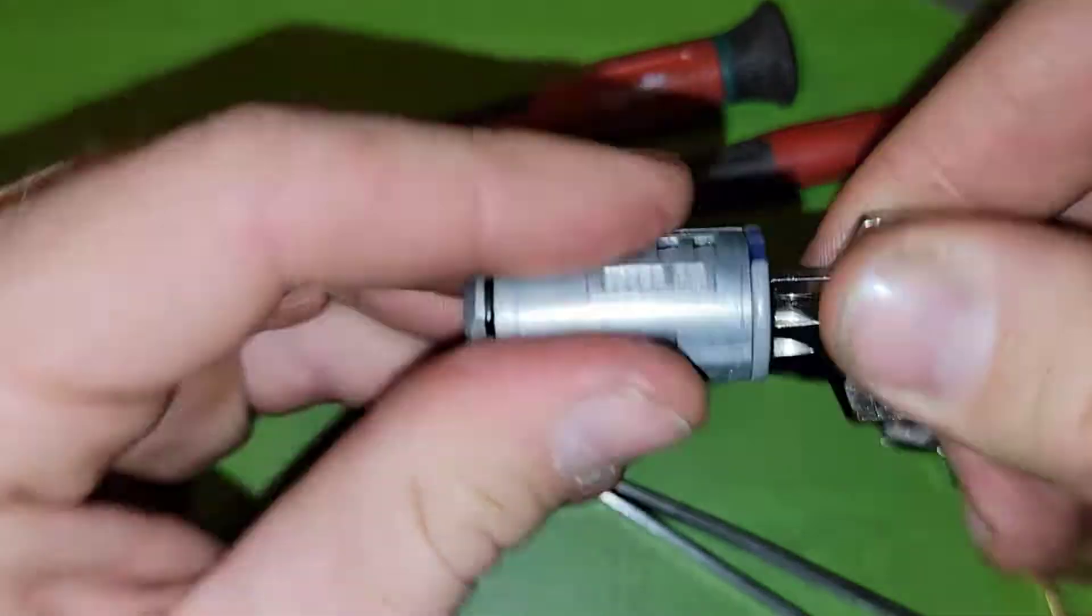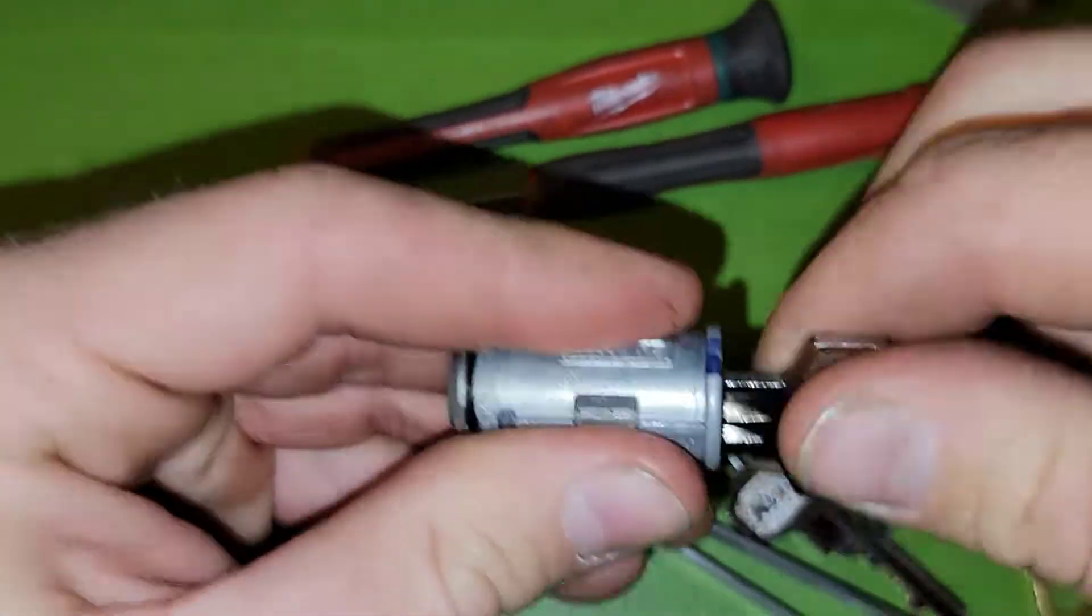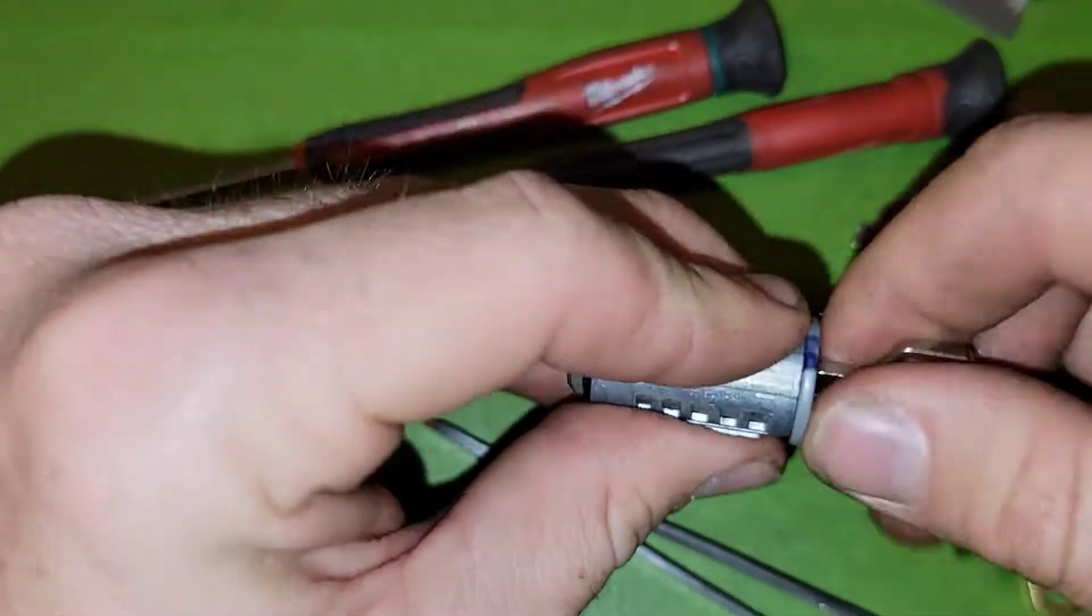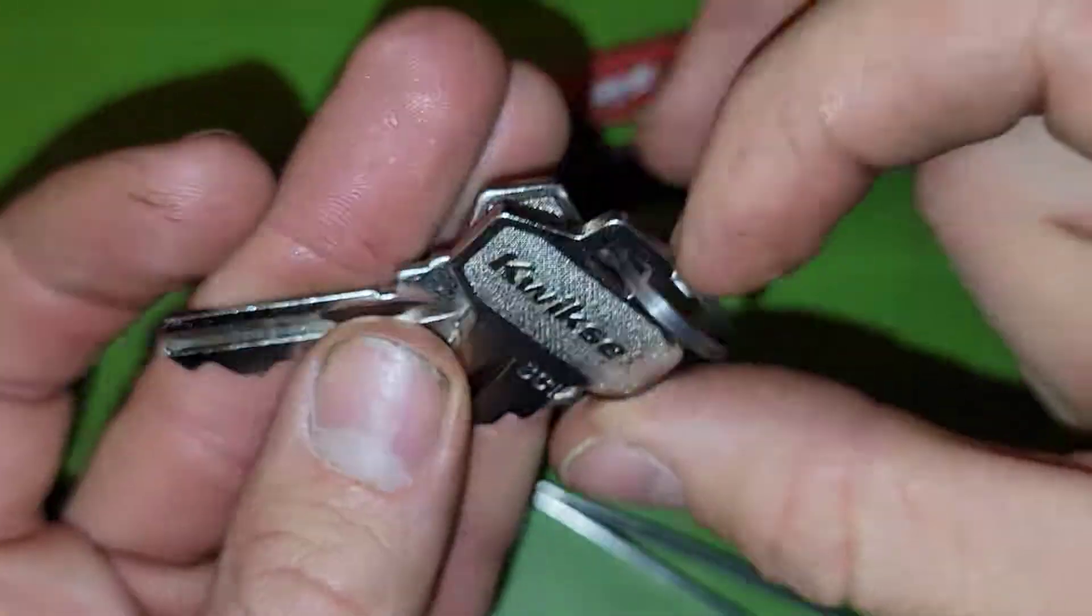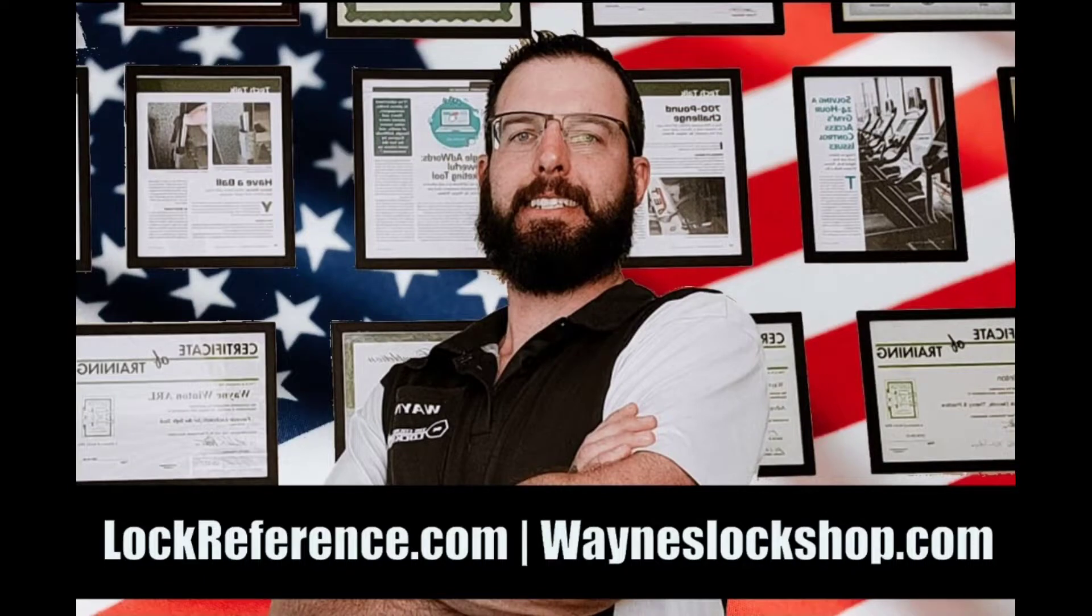So it is both a security feature that it is not allowing that space for the shim to actually reach and touch that sidebar to apply pressure, and it's also a bad thing because it's not that drill resistant.